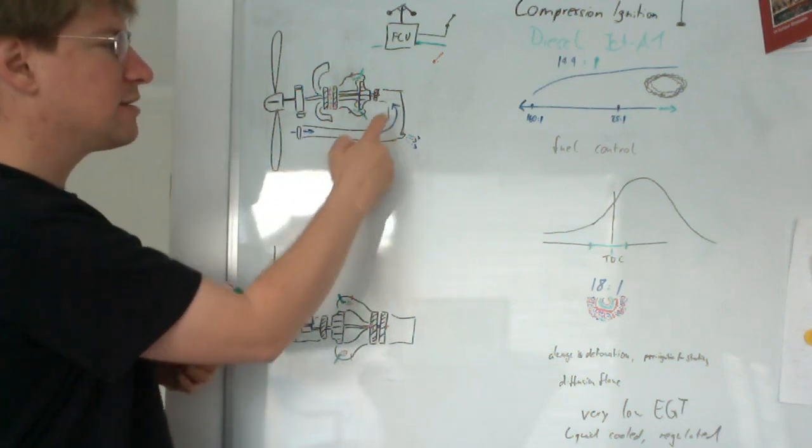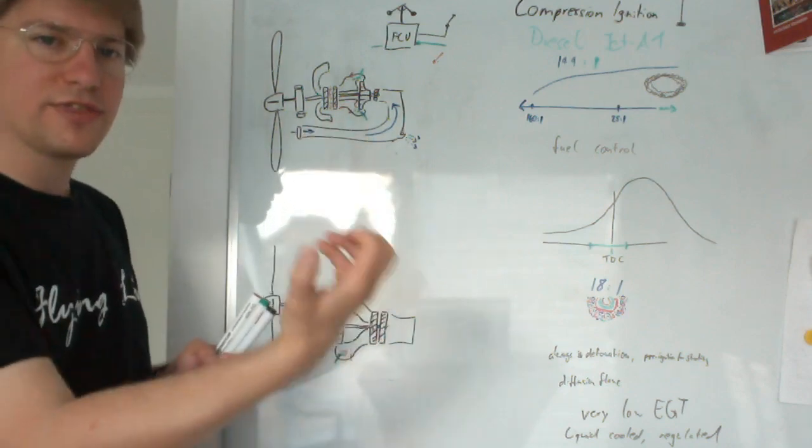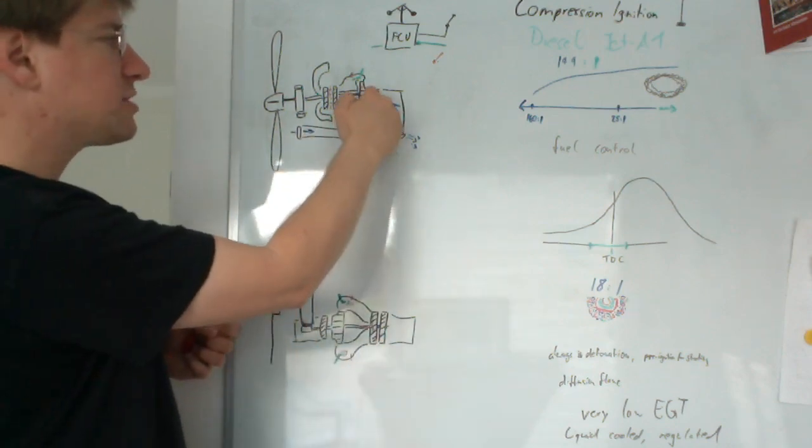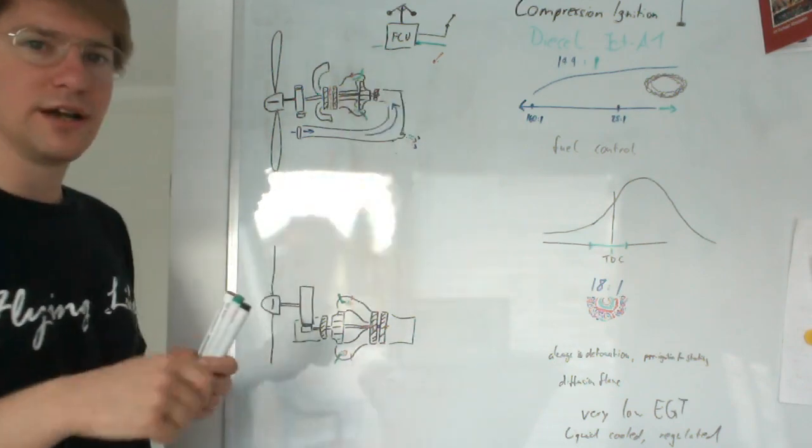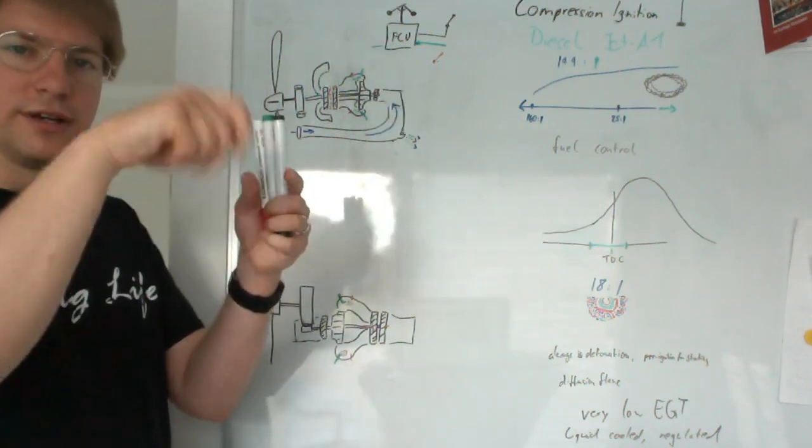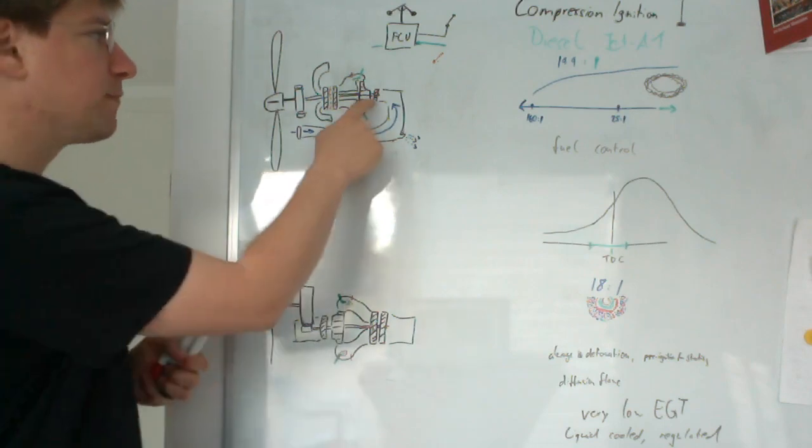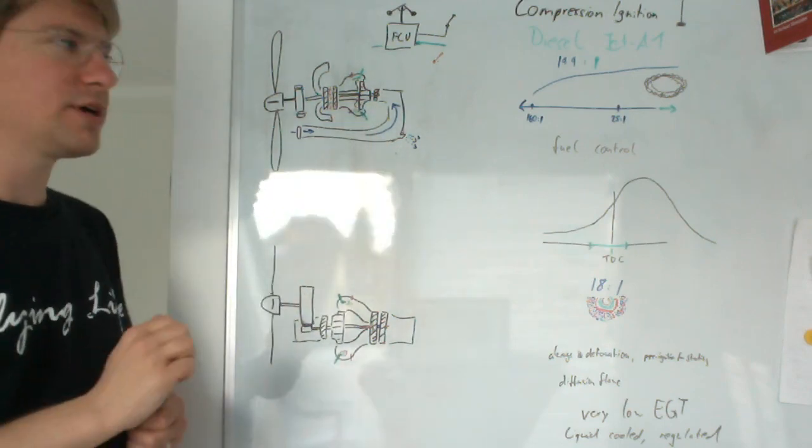The air comes in through this duct underneath the engine, enters the compressor section of the engine where it goes through the rotating first the axial and then the radial compressor.